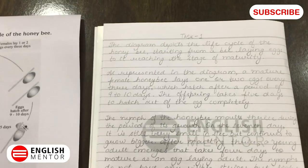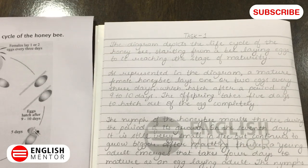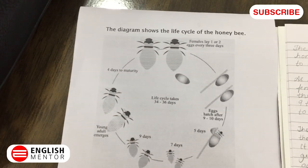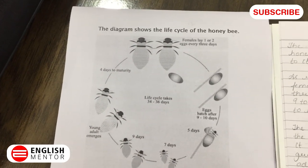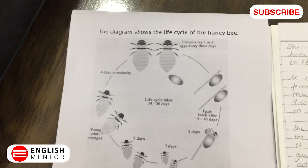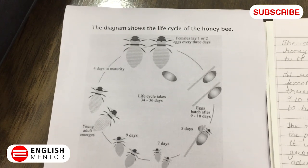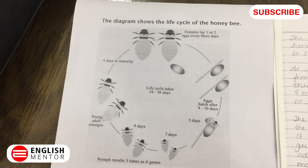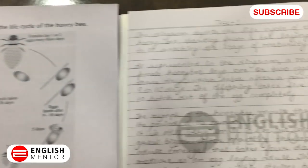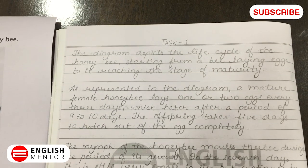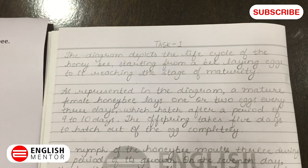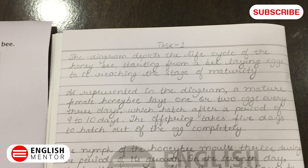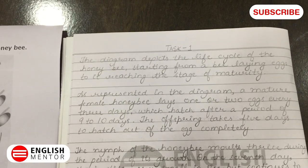Now coming to the introduction of the task, you can take the idea from the statement that is given to you, but make sure that you do not copy it word to word — make some changes of your own. You can write: the diagram depicts the life cycle of the honeybee, starting from a bee laying eggs to it reaching the stage of maturity.